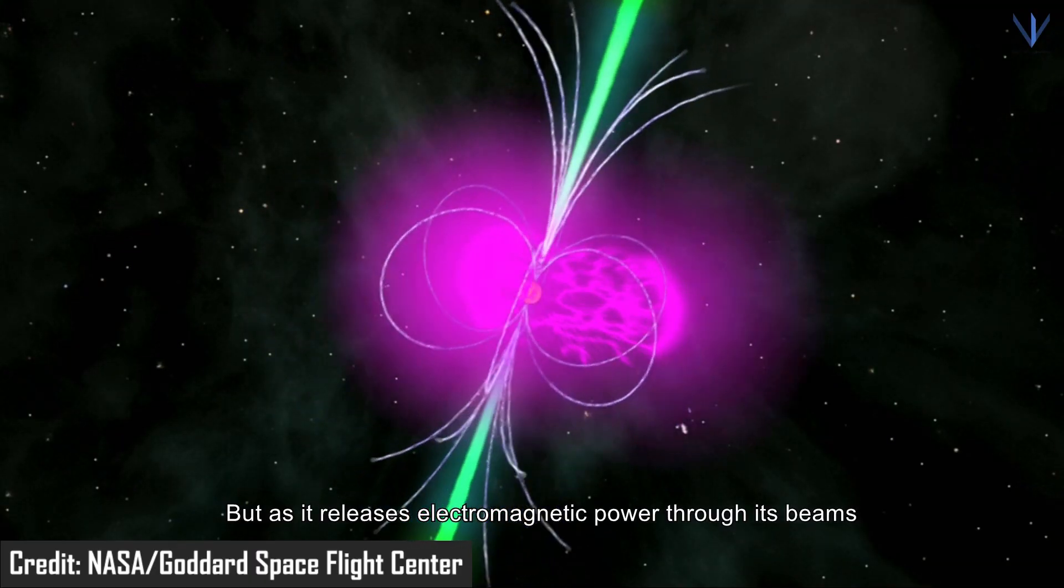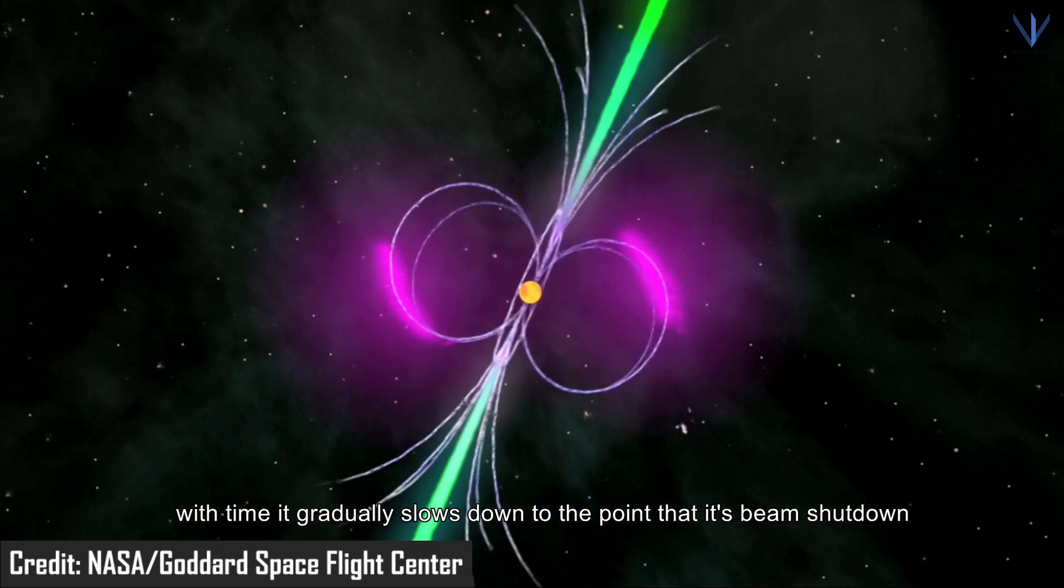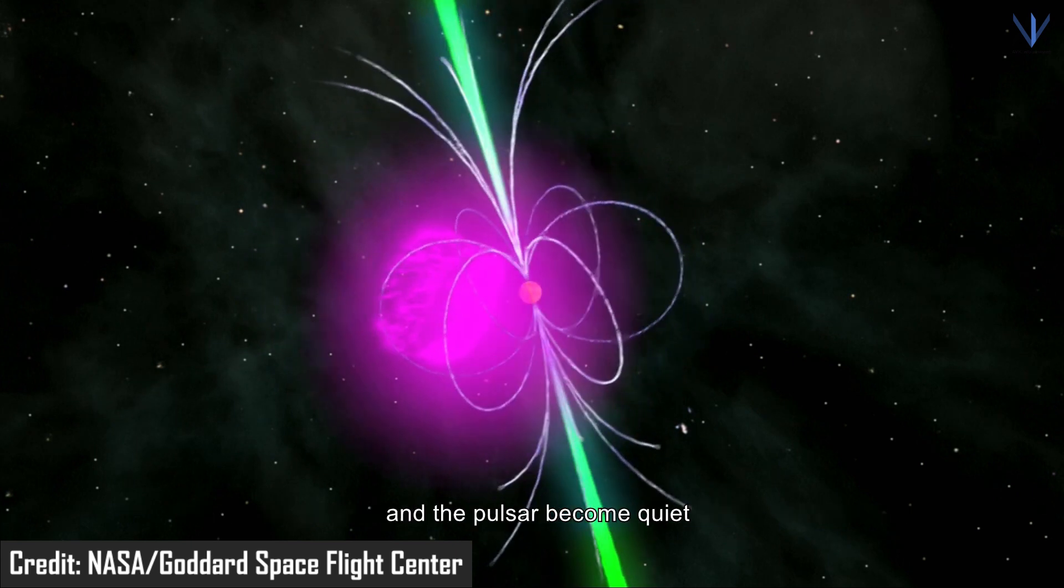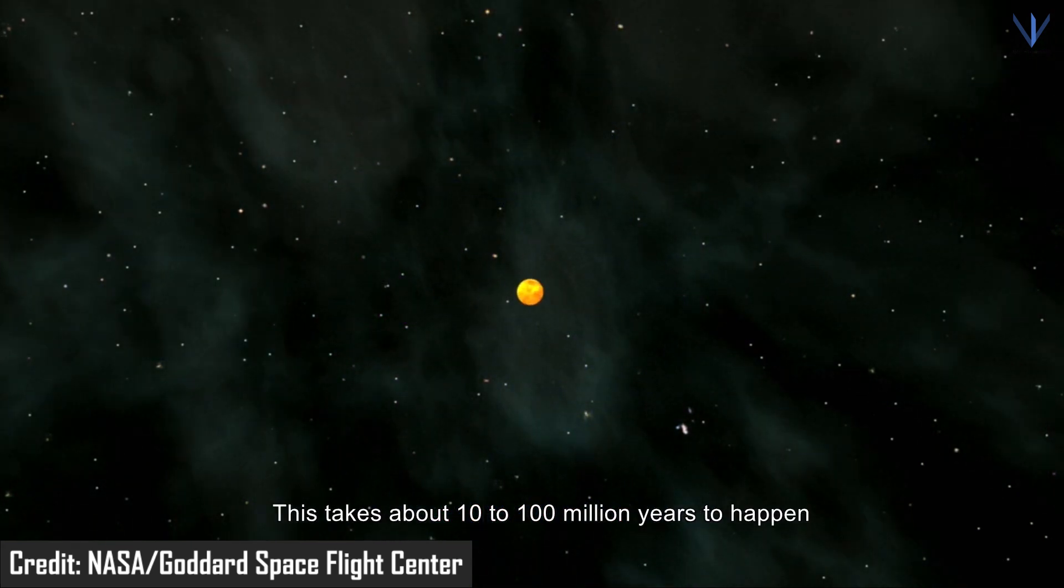But as it releases electromagnetic power through its beams, with time it gradually slows down to the point that its beams shut down and the pulsar becomes quiet. This takes about 10 to 100 million years to happen.